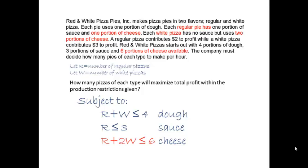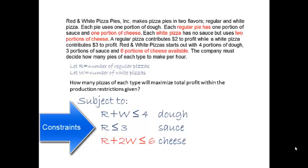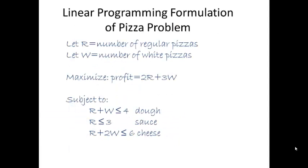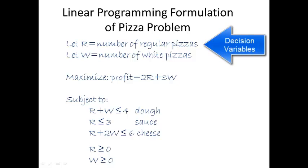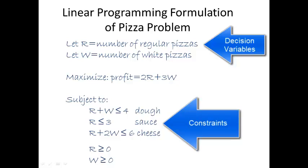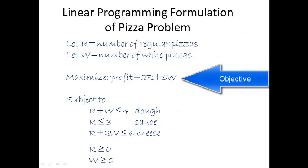These are the three constraint equations for the shared limited resources in this pizza problem. The complete linear programming formulation for the pizza problem is shown here. Non-negativity constraints have been added for each decision variable — the least you can make of any product is zero. This linear programming problem has two decision variables, three constraint equations (actually inequalities), and one objective. Every linear programming problem has only one objective, and that one objective is what gives it one unique optimal solution.